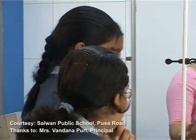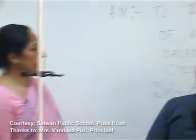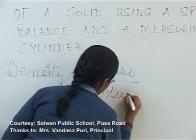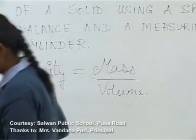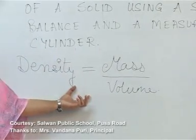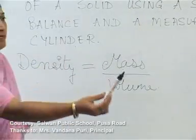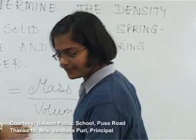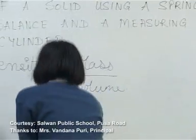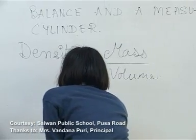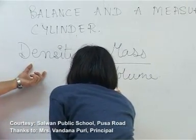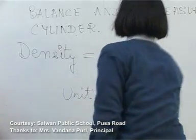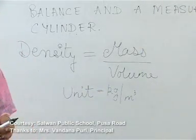Come and write. Who will tell the unit of density? Kilograms per meter cube. The unit of mass is kilograms and the unit of volume is meter cube, so the unit of density will become kilograms per meter cube.